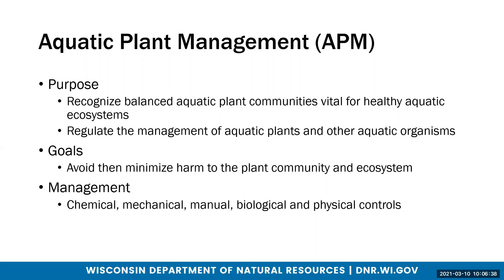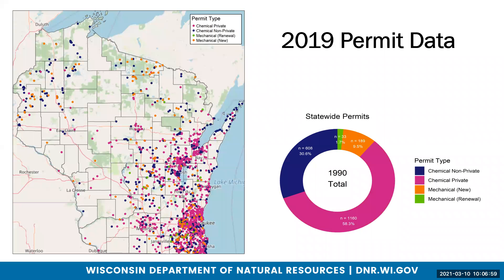The goal is to avoid, then minimize harm to the plant community and ecosystem. Management alternatives are chemical, mechanical, manual, biological, and physical controls. This is a map of the 2019 permits, broken down by the different permit types that we categorize. Permits come in as either chemical private or non-private permits. When I say private permit, I usually mean referring to private ponds. Non-private permits are traditionally lakes or small water bodies like ponds that either have public access, surface water discharge, or multiple owners.